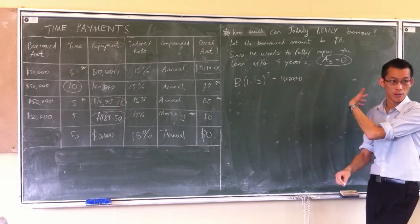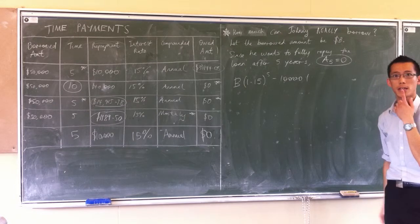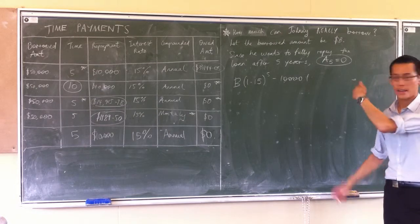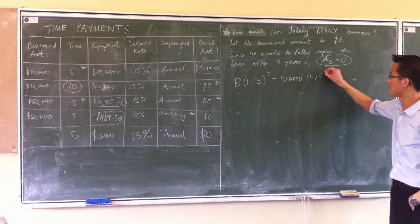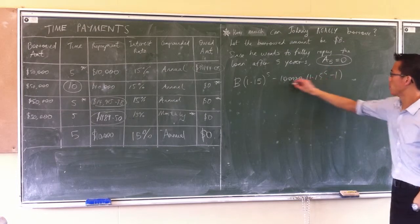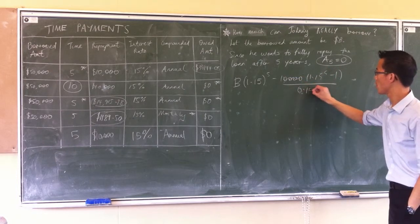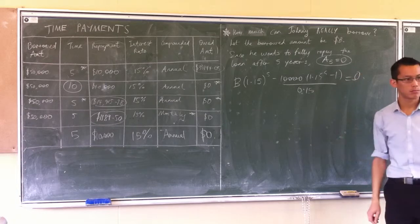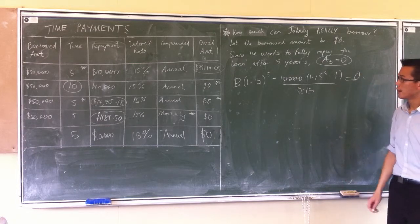And then we had our series over here for all the repayments he made, which I think was what was it? This is R to the n, so that's 1.15 to the power of 5 minus your 1, all divided by 0.15, and that's equal to 0 because he wants to finish the loan. So by now...